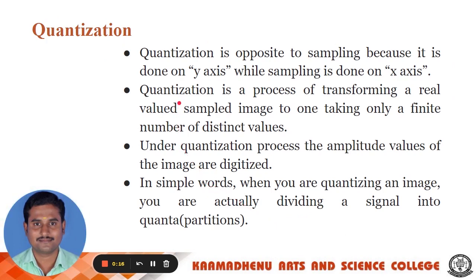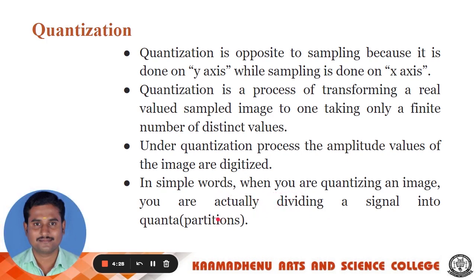Quantization is opposite to sampling. Sampling is done on the x-axis, whereas quantization is done on the y-axis. Quantization is the process of transferring a real-world sampled image to take only a finite number of distinct values. Under the quantization process, the amplitude values of the image are digitized. In simple words, when quantizing an image, you are actually dividing a signal into quanta — that is, partitions.